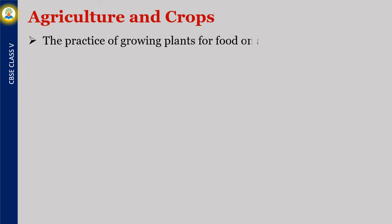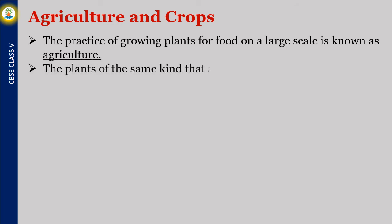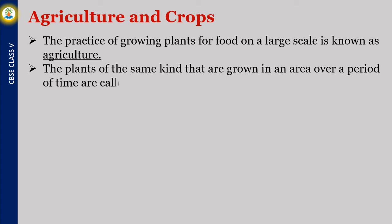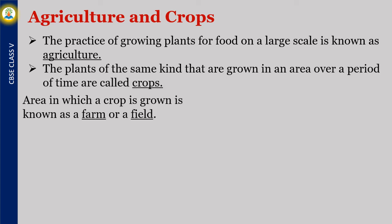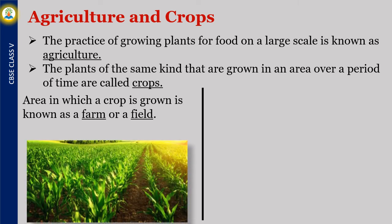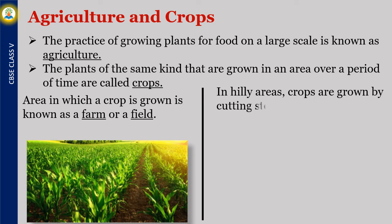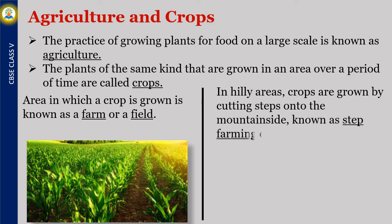Agriculture and crops. The practice of growing plants for food on a large scale is known as agriculture. The plants of the same kind grown in an area over a period of time are called crops. An area in which a crop is grown is known as a farm or a field. In hilly areas, crops are grown by cutting steps onto the mountainside, known as step farming or terrace farming.